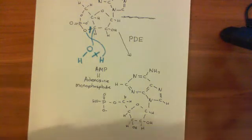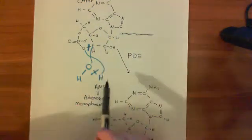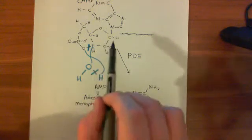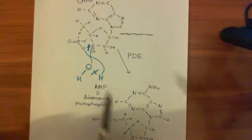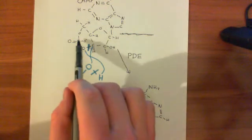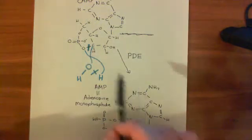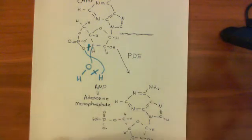So basically, what phosphodiesterases do is they take cyclic AMP and a water molecule and break it down into AMP. They use the water molecule to hydrolyze this link between the oxygen of the phosphate group here and the third carbon. And that creates us adenosine monophosphate, or AMP.